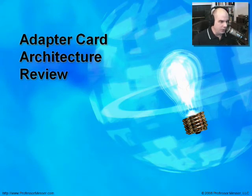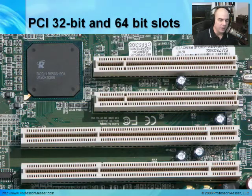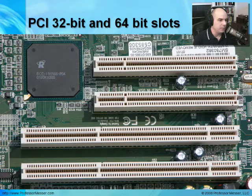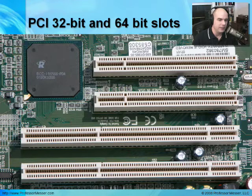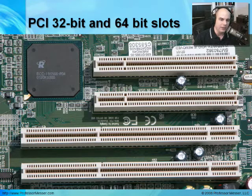First, let's go through a review of some adapter card architectures. If you recall looking at PCI slots, there were a couple of different kinds of PCI slots you can run into. This personal computer connection type is for both 64-bit — the larger connection — and 32-bit, which is the smaller one. So the larger number of bits, the longer the card is going to be, and you'll be able to tell based on how it looks what type of slot it goes into.